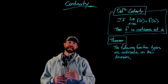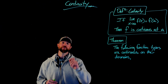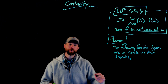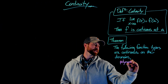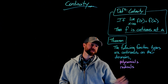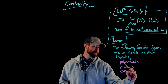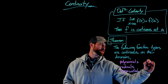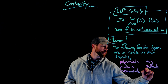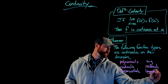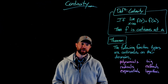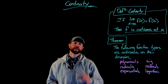The following six function types are continuous on their domains. What that means is that everywhere the function is defined, at every x value, it's also continuous. First up, polynomials are continuous on their domain. Radicals are also continuous on their domain. Exponentials, trig functions, rationals, and logarithmic functions as well. We won't go into detail proving these, but just know that all of these function types are continuous where they're defined on their domains.